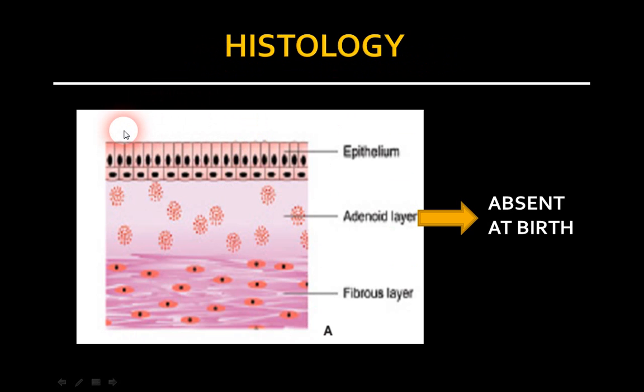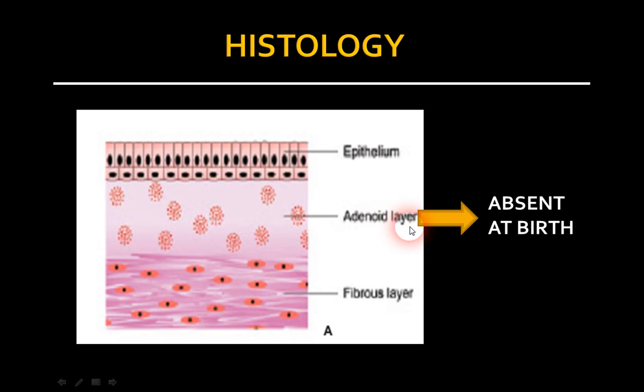What is the histology of conjunctiva? There are three layers: epithelium, the adenoid layer, and the fibrous layer. The adenoid layer is nothing but some lymphoid aggregations. Therefore, it is usually absent at birth and starts developing only from three to four months of life. Therefore, you do not see any adenoid layer infections — what we call follicles — in infants.